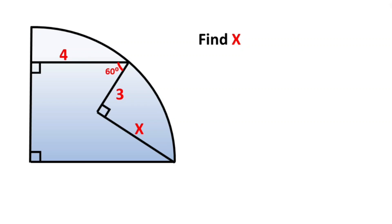Hello everyone. In this video we have one quadrilateral circle. This side is given four units, here is given three units, this angle is given 60 degrees, and x is to be found.